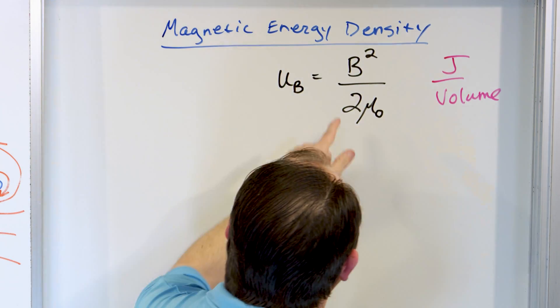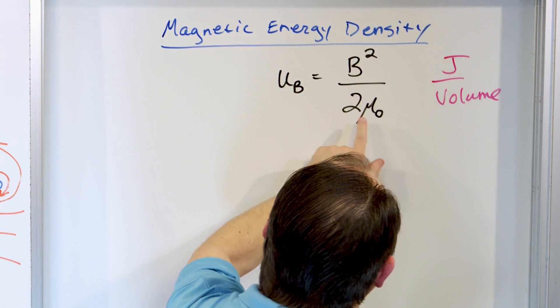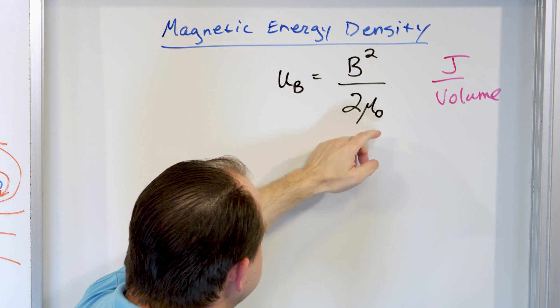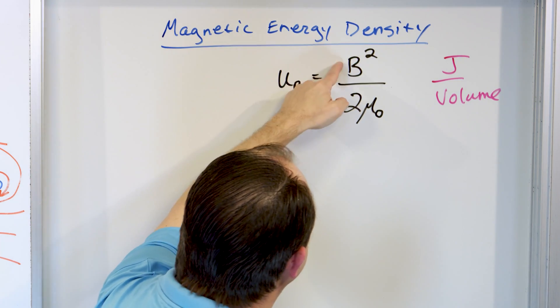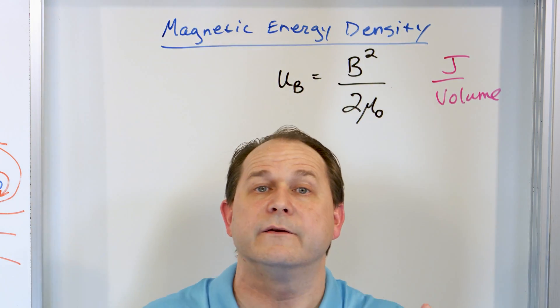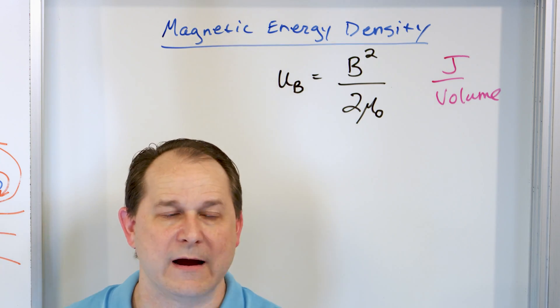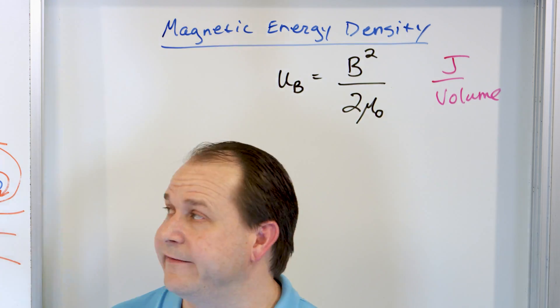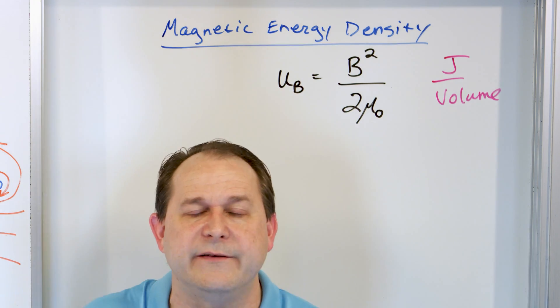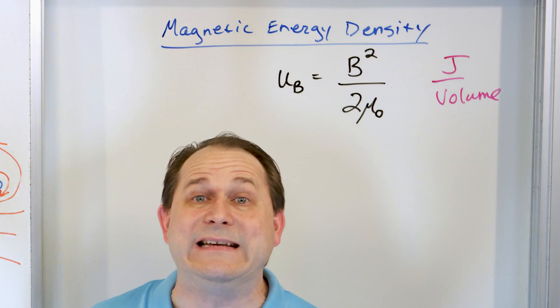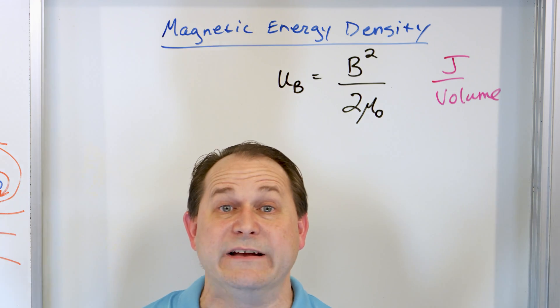The magnetic field, you square it and then divide by two numbers. This is a number and this is a number. Basically the energy density is just related to the magnetic field strength squared. The higher the magnetic field, the more energy it stores. We can build electronic devices, coils of wire that store lots of energy in magnetic fields that can be released in other situations, in circuits, for instance.